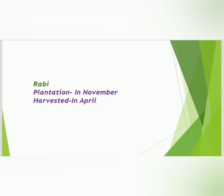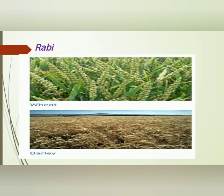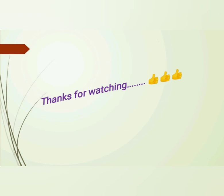The various examples of Rabi crops are: first one is wheat, second one is barley. So till now we have covered what are Kharif crops and what are Rabi crops with their examples.